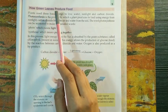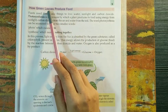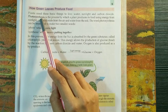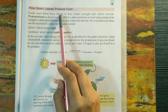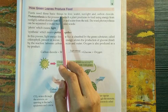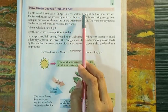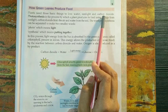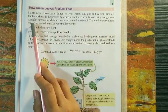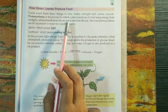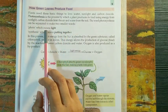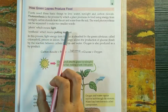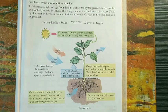How green leaves produce food. Green leaves produce food by photosynthesis. Plants need three basic things to perform photosynthesis: first is water, second is sunlight, and third is carbon dioxide, which is a type of gas.